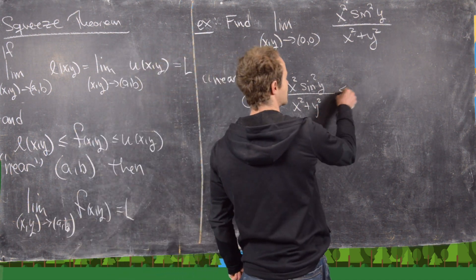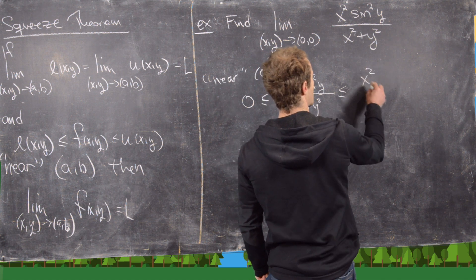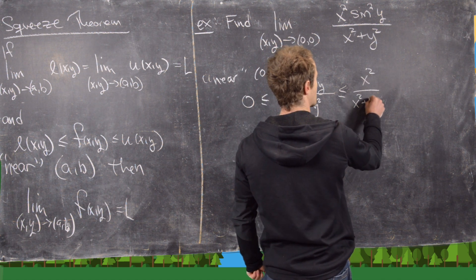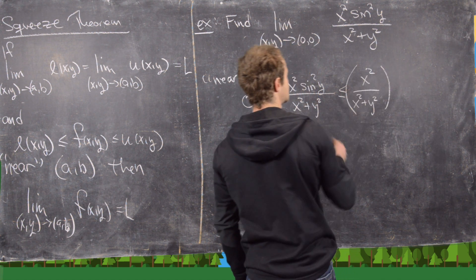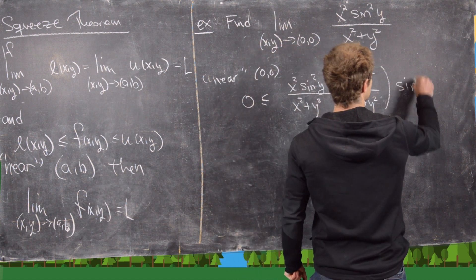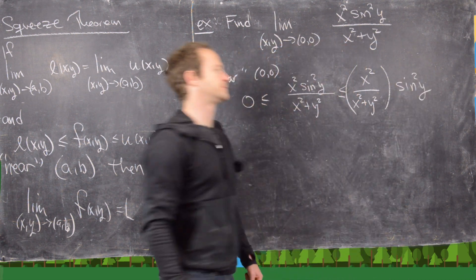Okay, so now we can rewrite this a little bit. So this is less than or equal to x squared over x squared plus y squared, all of that times sine squared y. Good.